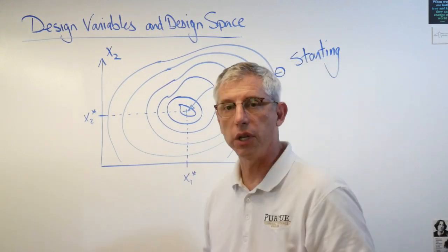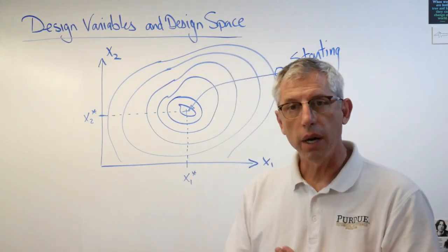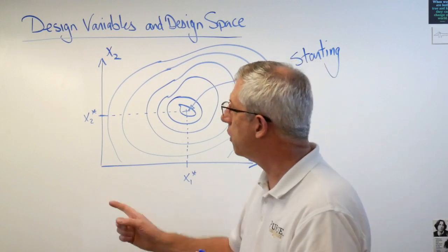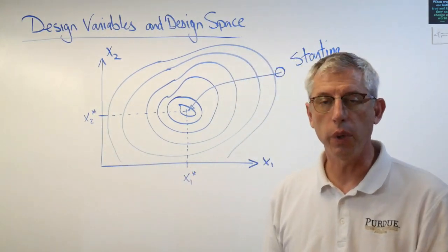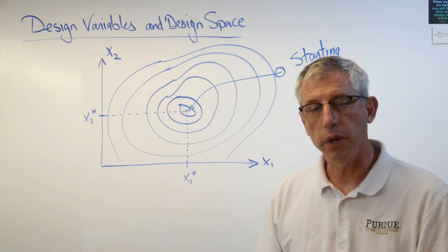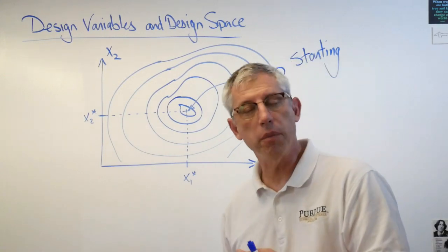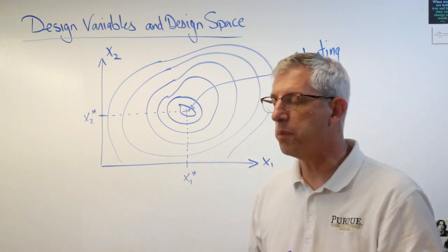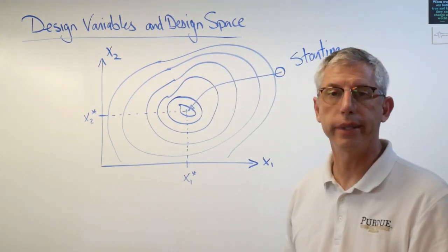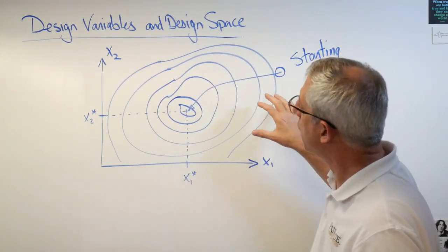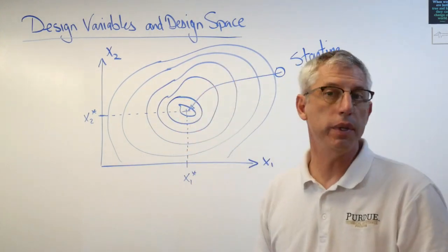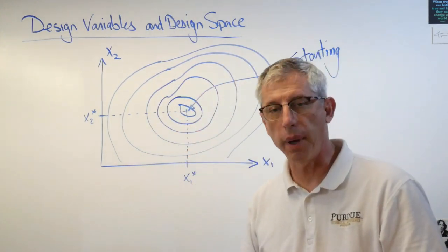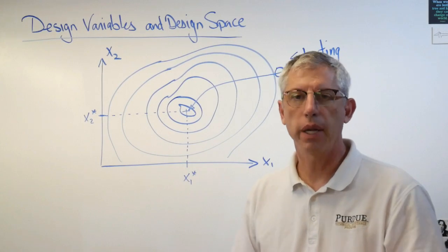So there it is in a nutshell. The big ideas are the concept of a design variable, those are the things you get to change as you wish, and an objective function, the thing that you calculate from your choice of design variables. And this all lives in a function space, a mathematical space called design space. And we'll spend a lot of time talking about how to move intelligently through design space. I hope this helps and I'll see you next time.